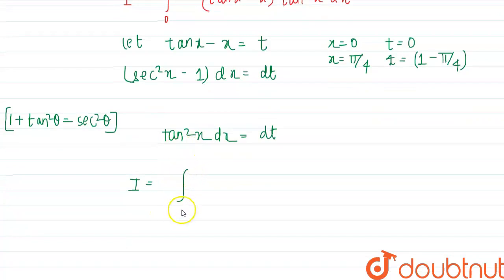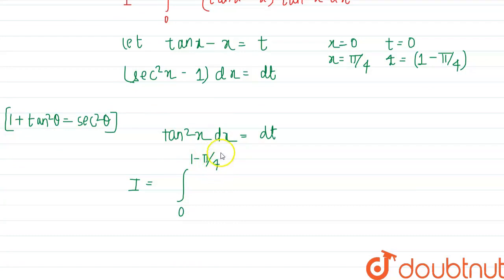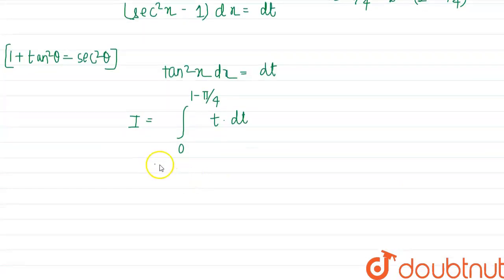So now we can place the limits. This is 0 to (1 - π/4), tan x - x is t into dt. So this will become t²/2 and the limits are from 0 to (1 - π/4).